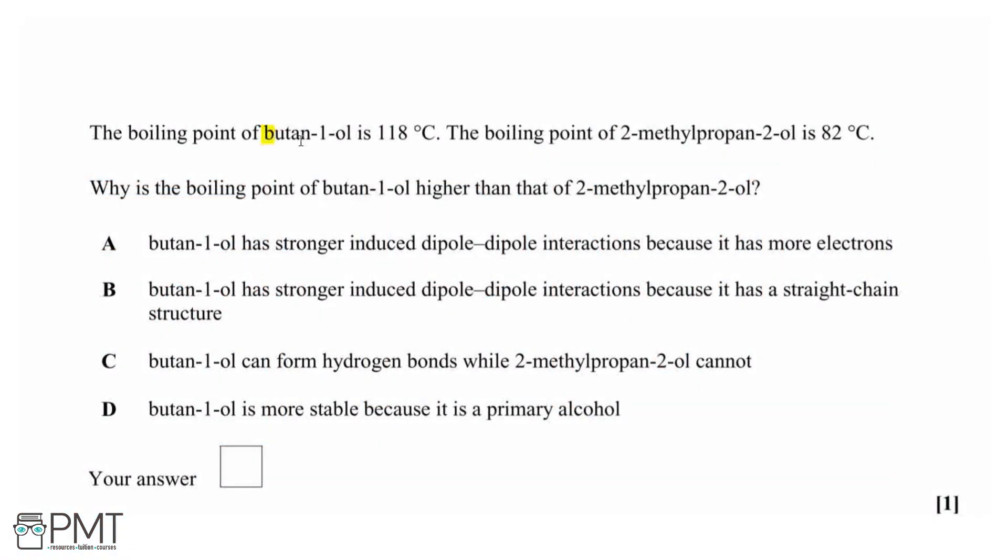For this question, we've been given the boiling point of butan-1-ol as 118 degrees, and the boiling point of 2-methyl-propan-2-ol as 82 degrees, and we need to find out why butan-1-ol has got a higher boiling point than 2-methyl-propan-2-ol.